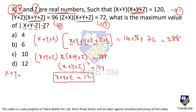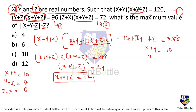With x+y+z = 12: from equation 1, x+y = 120/12 = 10; from equation 2, y+z = 96/12 = 8; from equation 3, z+x = 72/12 = 6. Alternatively, with x+y+z = -12: x+y = -10, y+z = -8, z+x = -6.